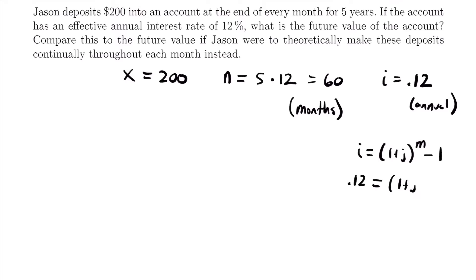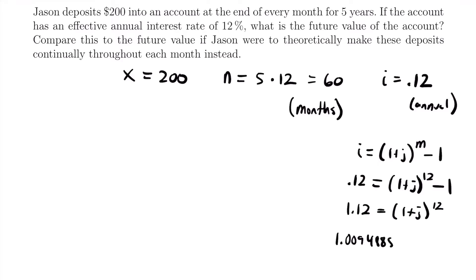So we have 0.12 equals (1 + J)^12 minus 1. Adding 1 to both sides gives 1.12 equals (1 + J)^12. Taking the 12th root of both sides — meaning each side to the 1/12 power — gives 1.0094888 equals 1 + J. Subtracting 1 from both sides gives our monthly rate J equals 0.0094888, with more decimals beyond that which we'll round off there.